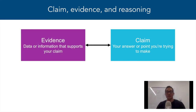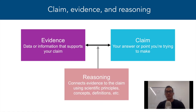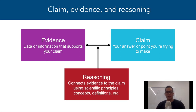Evidence is going to be the empirical data that you've gathered in the lab or given to you on an exam, and reasoning describes how the evidence is connected to the claim you're trying to make, such as why the evidence is relevant to the claim. In science, we want to make sure that our reasoning is based in some sort of scientific definition, concept, rule, or principle.